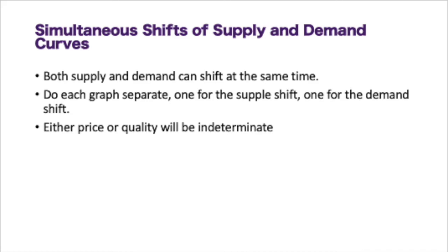There are also possibilities of a simultaneous shift, where supply and demand both shift at the same time. When doing a double shift, my suggestion is to do them separately: first do your supply shift, then your demand shift, and see what happens to price and quantity. The double shift rule indicates that either price or quantity will be indeterminate. For example, if a supply shift shows price increasing and quantity decreasing, and a demand shift shows price increasing and quantity increasing, then price increases in both — so price goes up. But quantity increased in one and decreased in the other, so quantity would be indeterminate.